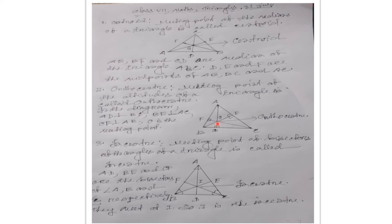Now come to the incentre. The meeting point of the bisectors of the angles of a triangle is called incentre. AD, BE and CF are the bisectors of angles A, B and C. Bisector means: AD divides angle BAC into two equal parts — angle BAD equals angle CAD. So AD is called the bisector of angle BAC.